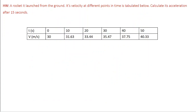Here is one more assignment: A rocket is launched from the ground. Its velocity at different points in time is tabulated at t = 0, 10, 20, 30, 40, 50. Calculate its acceleration after 15 seconds. Since 15 is not a tabular point, you cannot use the simplified expression — you must use the general expression. Acceleration is the first derivative of velocity, so find dv/dt at t = 15. Follow the same procedure to find the value.